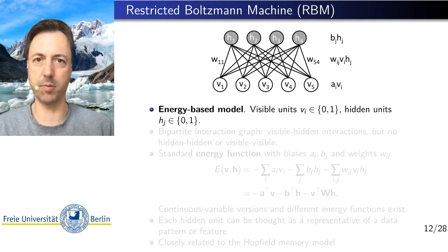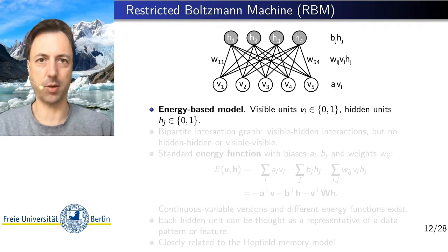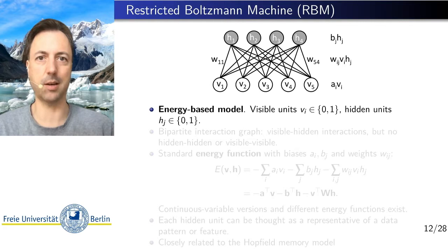We will see different types of generative models such as variational autoencoders, generative adversarial networks, etc. But now we will start with energy-based models, which is an important class of generative models, and specifically restricted Boltzmann machines, which is one very famous and important classic architecture of energy-based models.